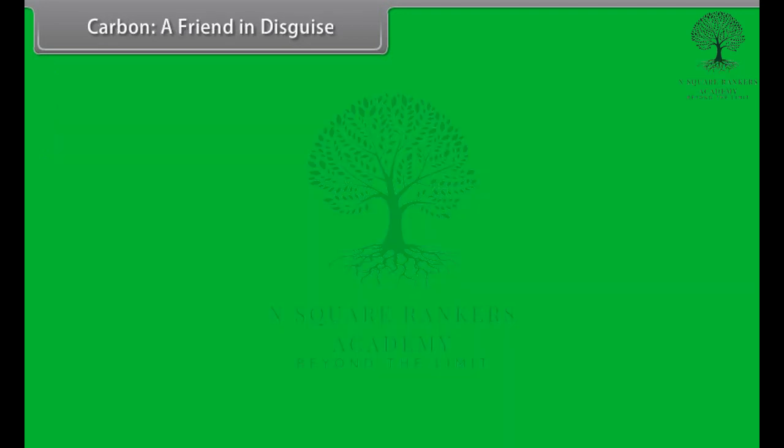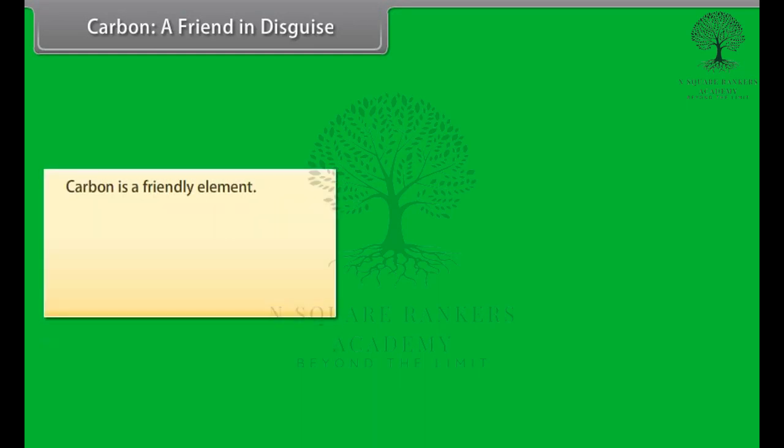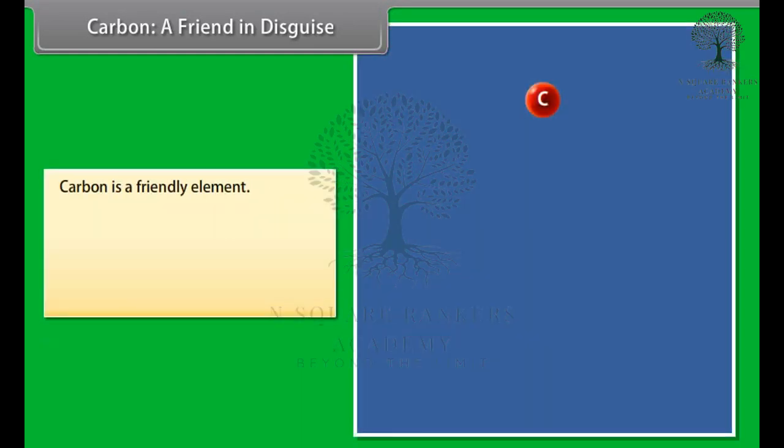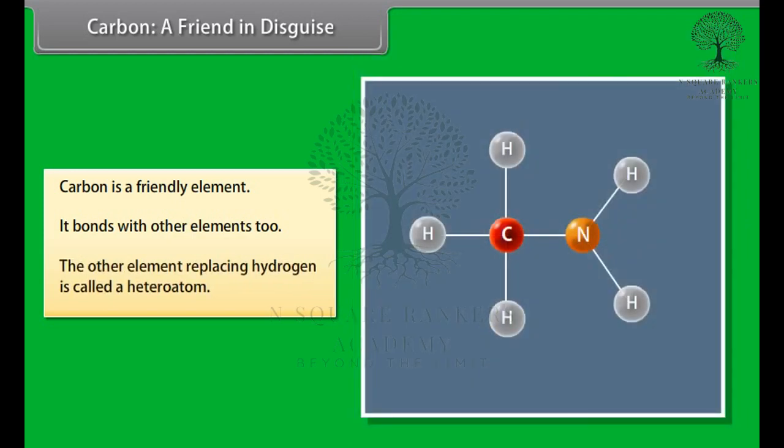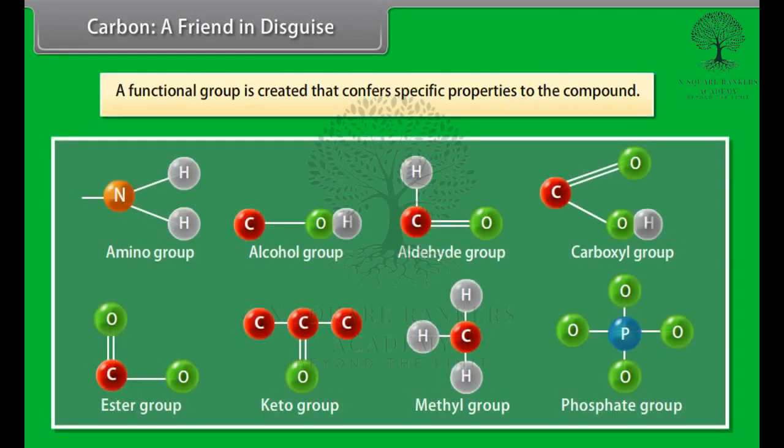Carbon, a friend in disguise. Carbon is a friendly element. It not only bonds with hydrogen but also with other elements such as halogens, oxygen, nitrogen, and sulfur. The compounds are formed in the same manner as with hydrogen. However, instead of hydrogen, the other element is used and this element replacing hydrogen is called a heteroatom. A functional group is created that confers specific properties to the compound without considering the length and nature of the carbon chain.